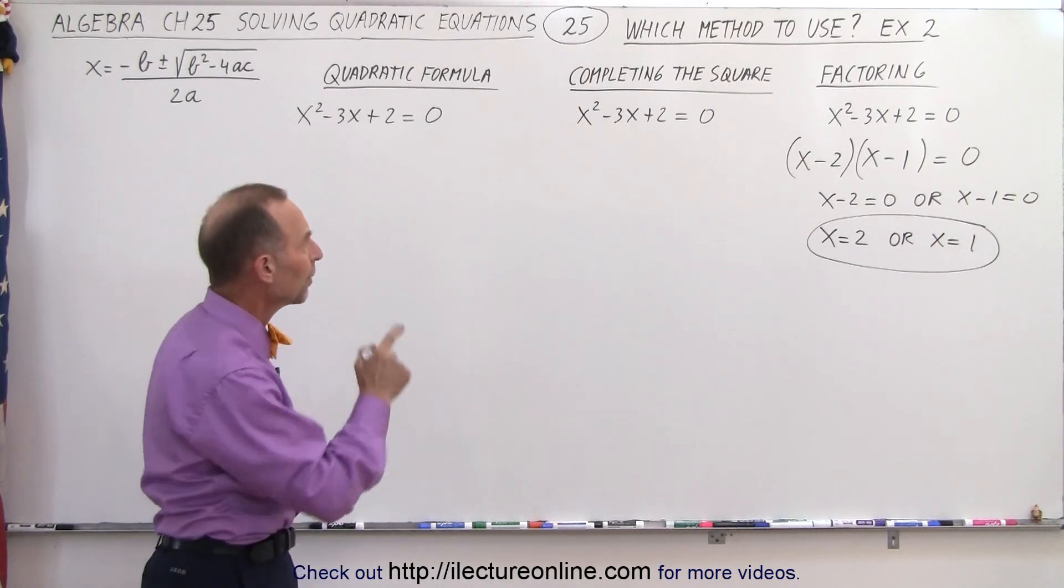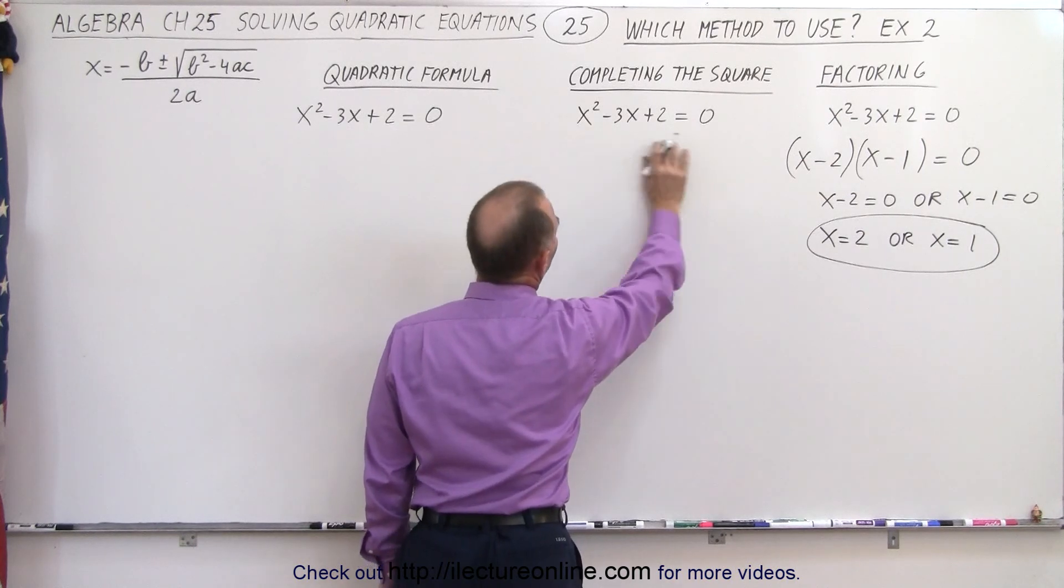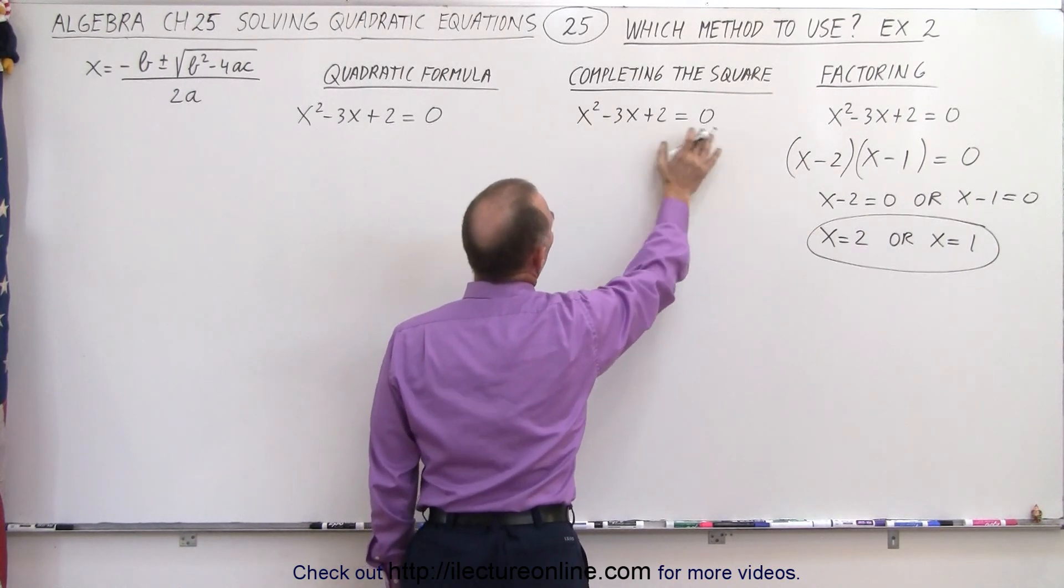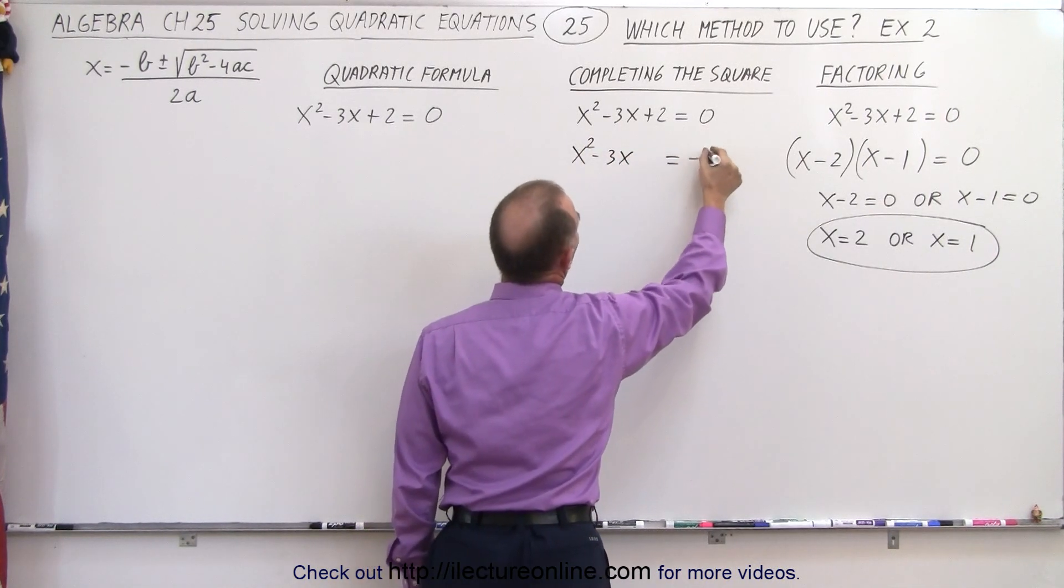Now let's see what we can come up with when we complete the square. I know that I have a 1 in front of the X squared term, so I don't have to divide everything by A. Then I move the 2 across, so I get X squared minus 3X is equal to negative 2.